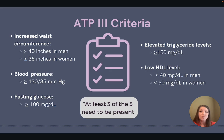These criteria include increased waist circumference — that's anything greater than or equal to 40 inches in men and greater than or equal to 35 inches in women — blood pressure greater than or equal to 130 over 85, and elevated fasting glucose.